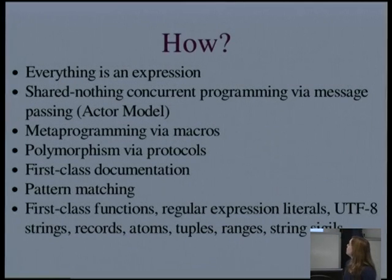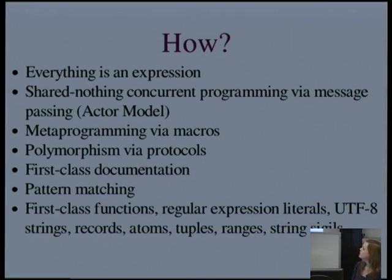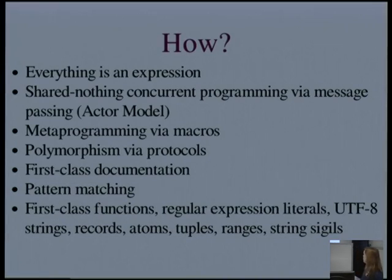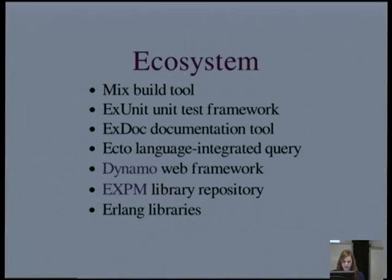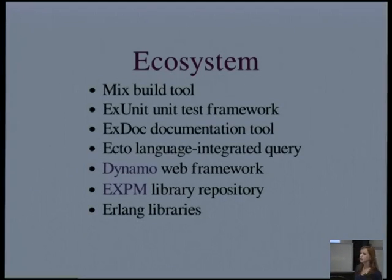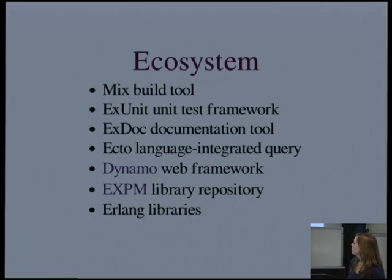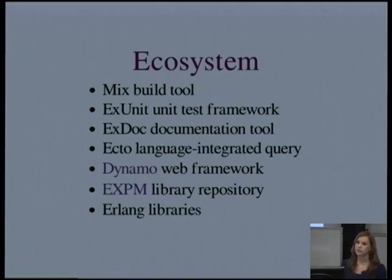So how does Elixir achieve these goals? Well, there's a lot of different features and I'm not going to have time to go into all of them, so here are what I think are some of the highlights. There are good things in there which aren't in Erlang, including polymorphism via protocols, regular expression literals, UTF-8 encoded strings, and a lot more. For a new language, it also has quite a well-developed ecosystem already. Of course it has everything that Erlang has, so we can leverage all of those libraries, but it also has its own build tool called Mix, a unit test framework, a docs tool, there's Ecto which is like LINQ for Elixir, a web framework called Dynamo, and a repository where you can find good libraries — about 110 libraries at the moment.